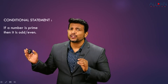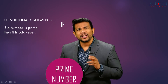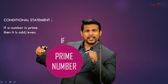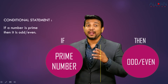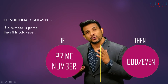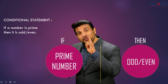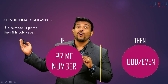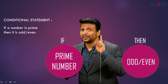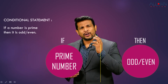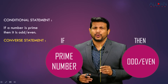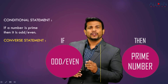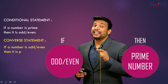Now here's another example: 'If a number is prime, then it is odd or even.' This is true because prime numbers are only divisible by themselves and one. They are all odd except for 2, which is even. So if a number is prime, it is odd or even. Now let's write the converse by swapping the antecedent and consequent: if a number is odd or even, then it is prime.